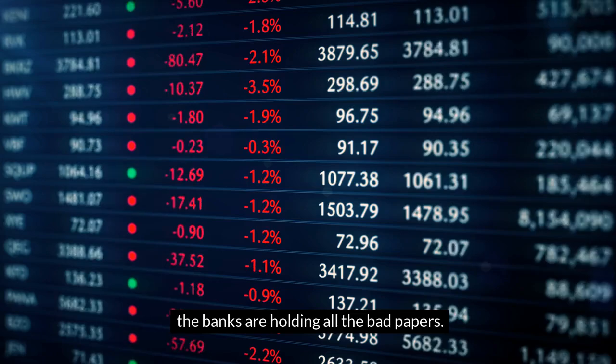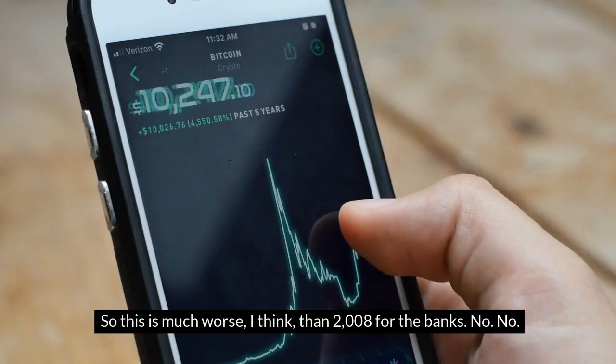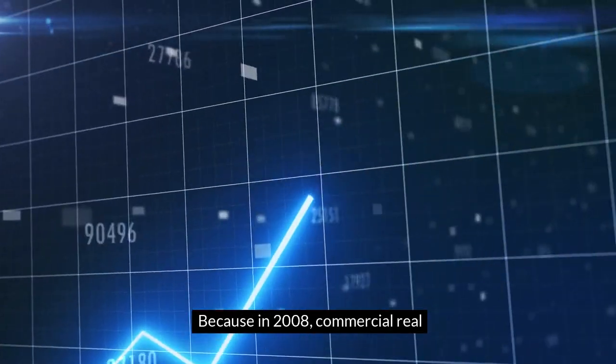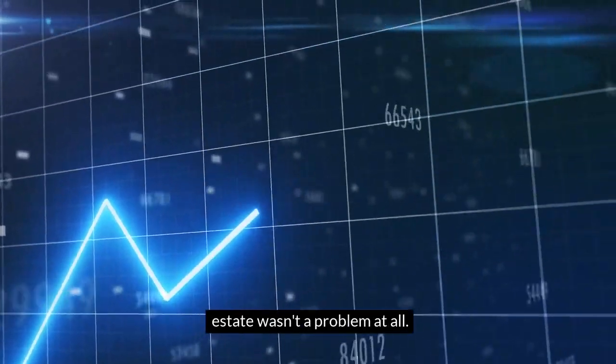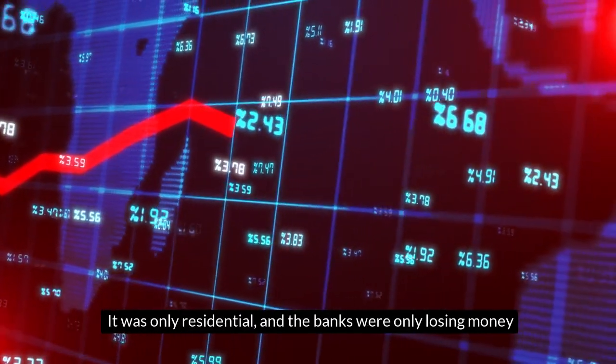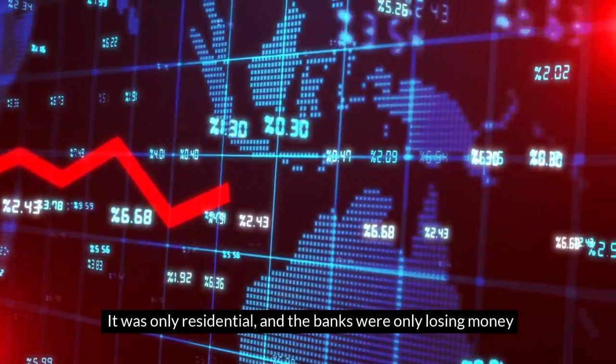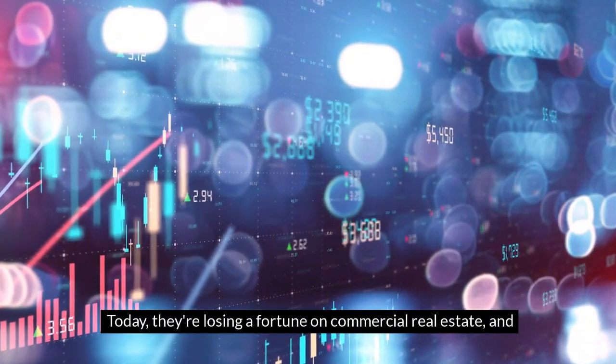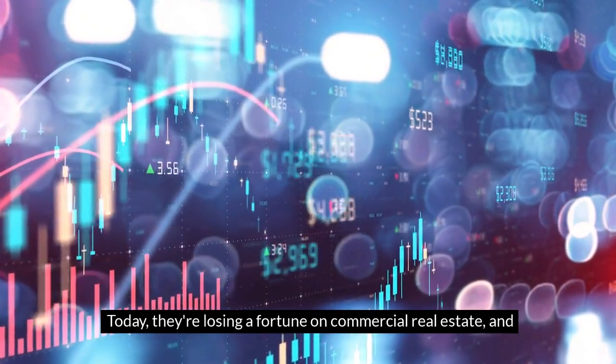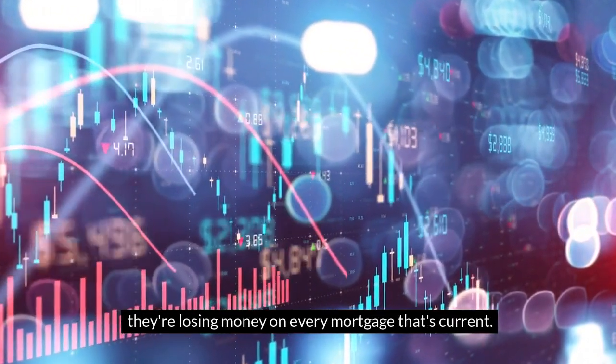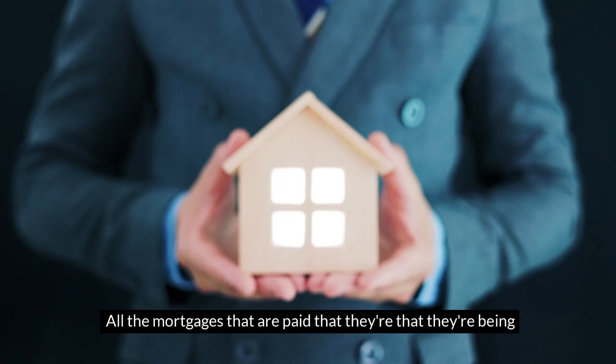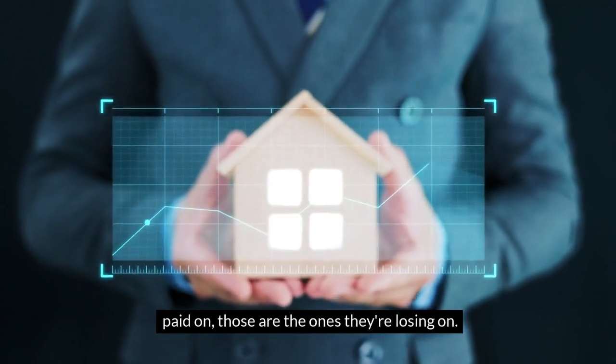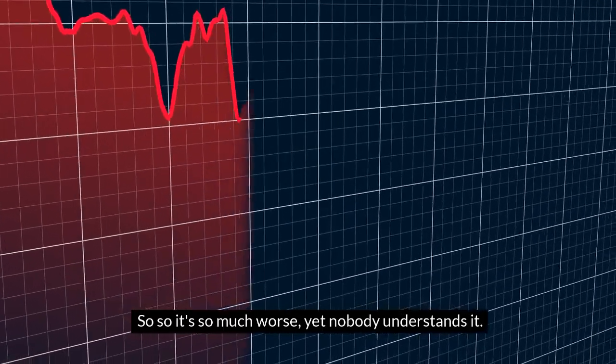Prices have collapsed, and the banks are holding all the bad paper. So this is much worse, I think, than 2008 for the banks. In 2008, commercial real estate wasn't a problem at all—it was only residential. The banks were only losing money on the mortgages that went into default. Today, they're losing a fortune on commercial real estate and they're losing money on every mortgage that's current. All the mortgages that are being paid—those are the ones they're losing on. So it's so much worse, yet nobody understands it.